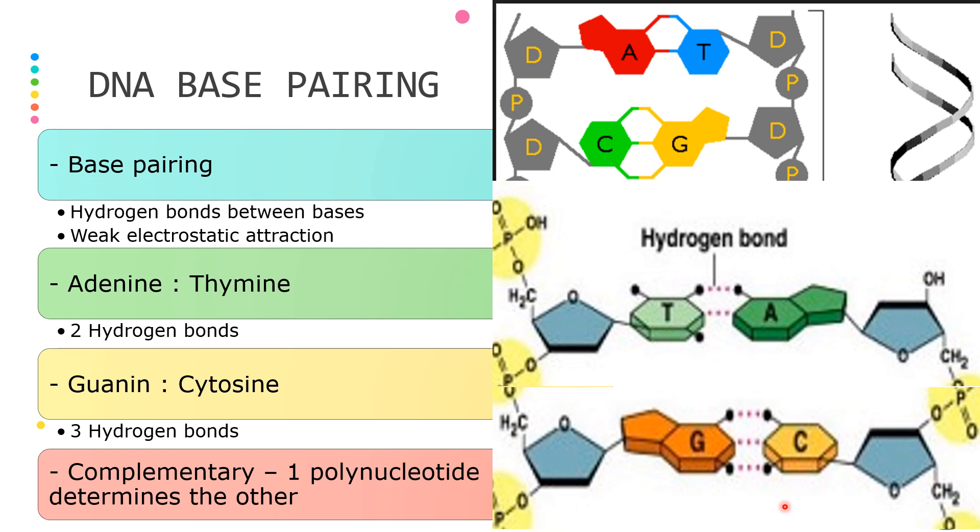Because of the base pairing, the sequences of the two nucleotides or polynucleotides in the helix are complementary. The sequence of one polynucleotide will determine the sequence of the other polynucleotide.